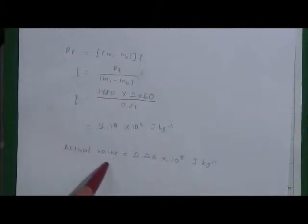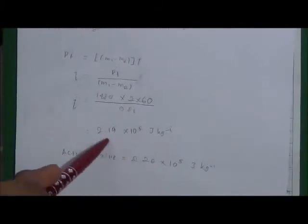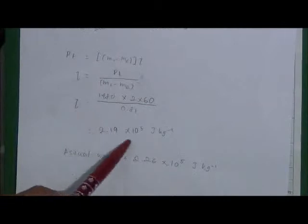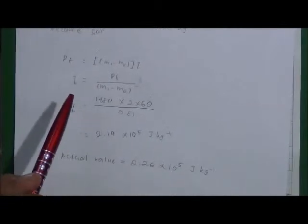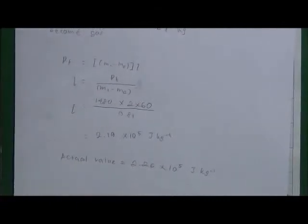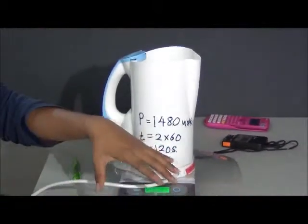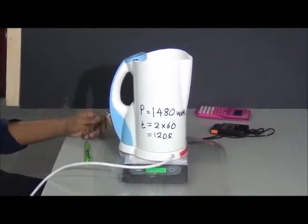So, the actual value is 2.26 times 10 to the power of 5. But the value that I got is less because maybe some of the water that condensed after being vaporized dripped onto the plastic sheet. So, there's an error on that. So, the weight became heavier.